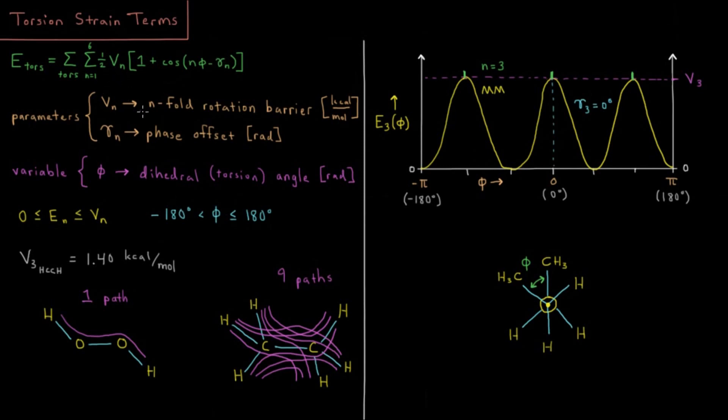Our rotation barrier is an energy unit. So typically we would want that to be in units of kilocalories per mole if that's the unit that we're working in. Gamma, the phase offset, would often be in radians. If you're working in radians with your angles, the variable then would be the dihedral or torsion angle also in radians.